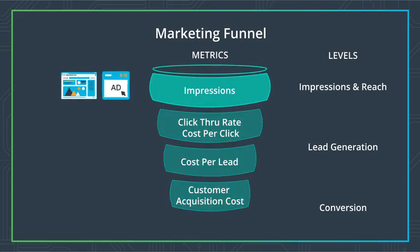To do this, we use ad platforms and search engine optimization, or SEO. With SEO, we can make sure our ad shows up for the right mix of search terms as people are searching for things online. For example, search terms like 'grocery delivery' or 'grocery shopping' would be good search terms when our ad shows up for the person.